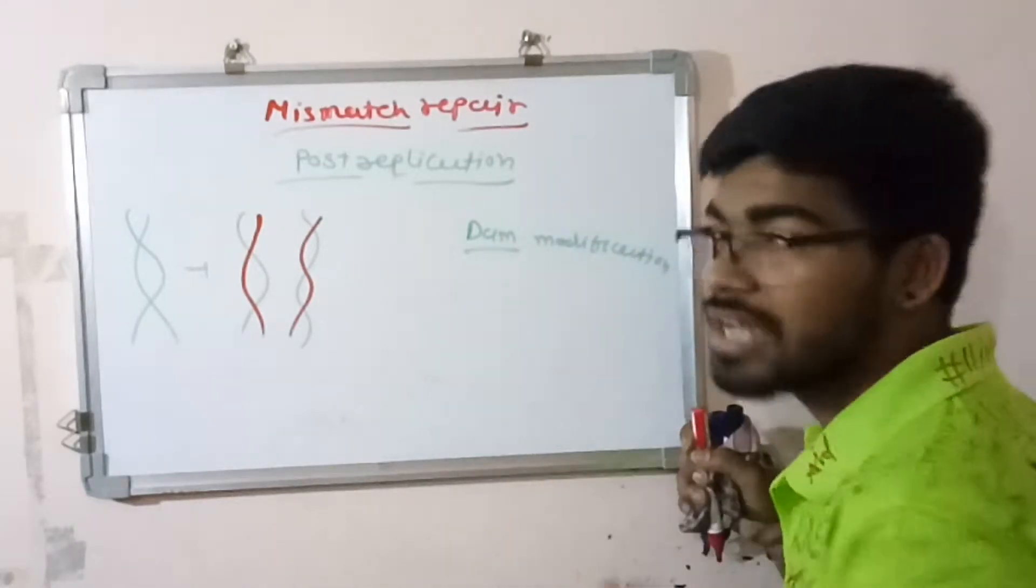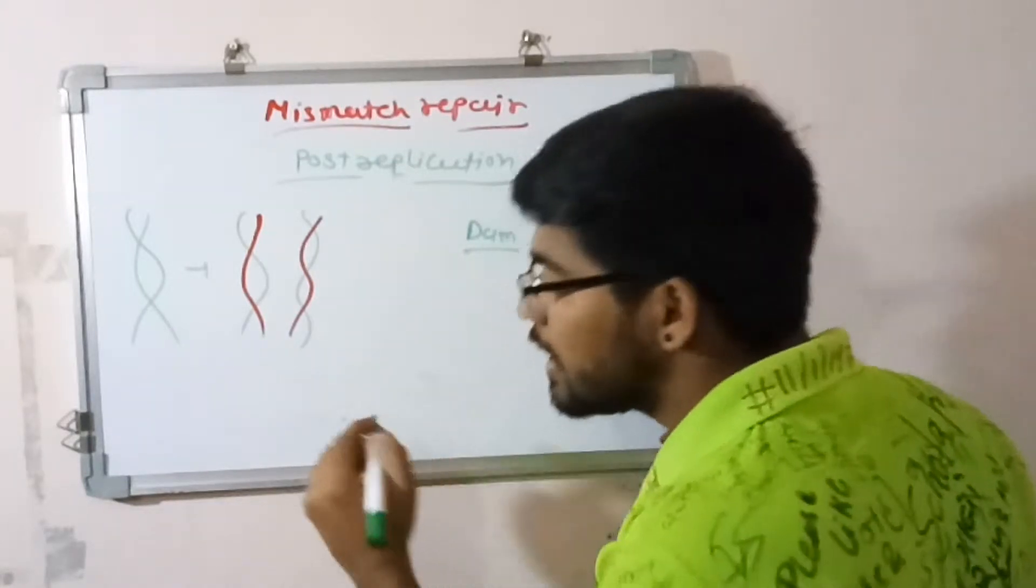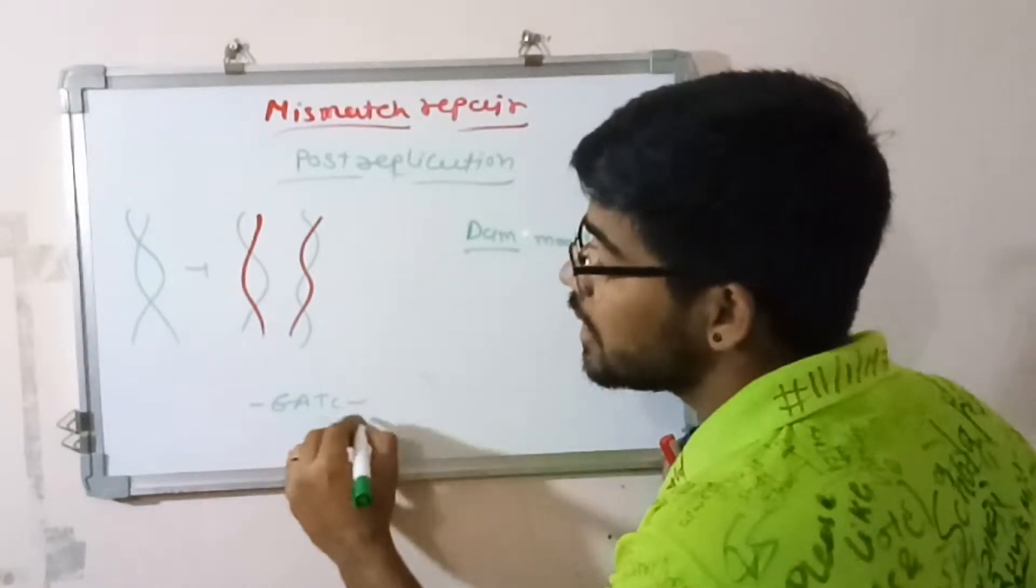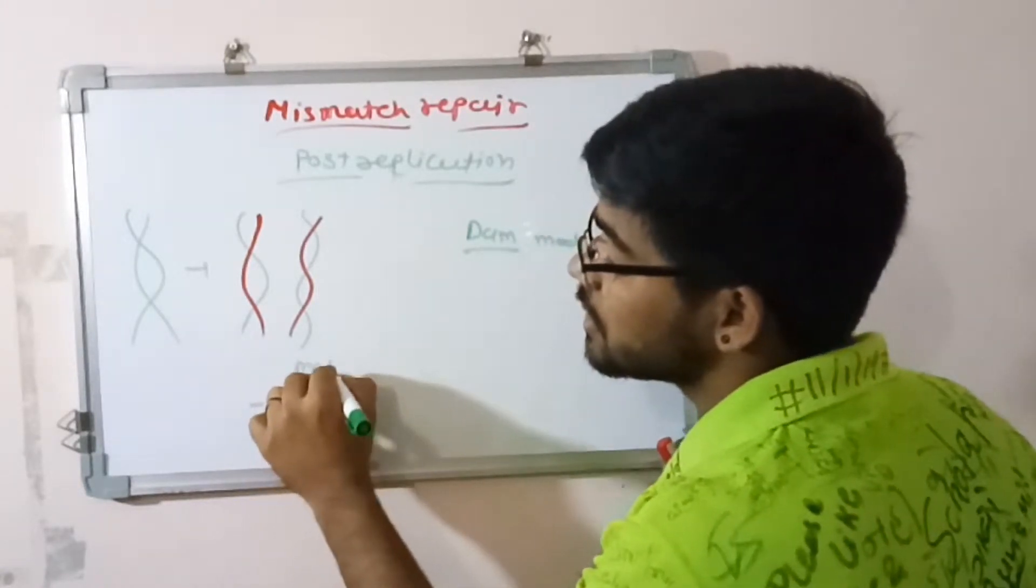The full form of dam is DNA adenine methylation. In the parental strand, after GTC, after T the methylation occurs.